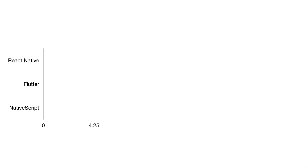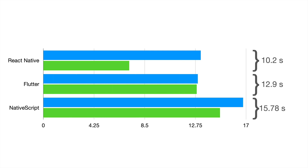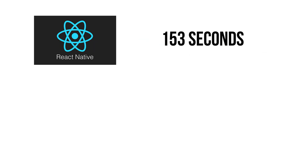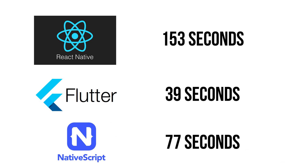Averaging the subsequent runs (not the first-run times, since those are so different): React Native at 10.2 seconds, Flutter at 12.9 seconds, and NativeScript at 15.78 seconds. For the final cumulative score, I'm adding average creation time, first-run time, and average subsequent run time. React Native totals 153.9 seconds. Flutter wins at 39 seconds. And NativeScript is in the middle at 77.4 seconds.